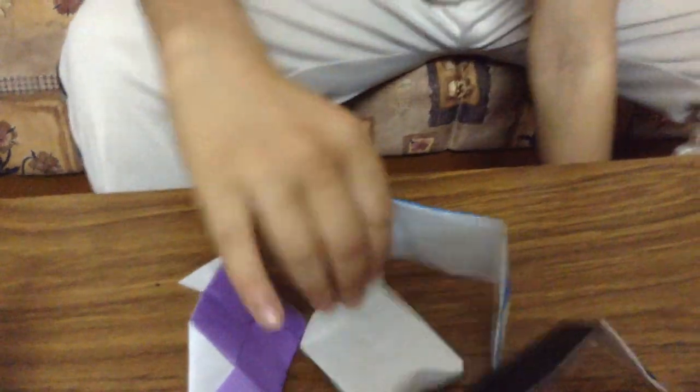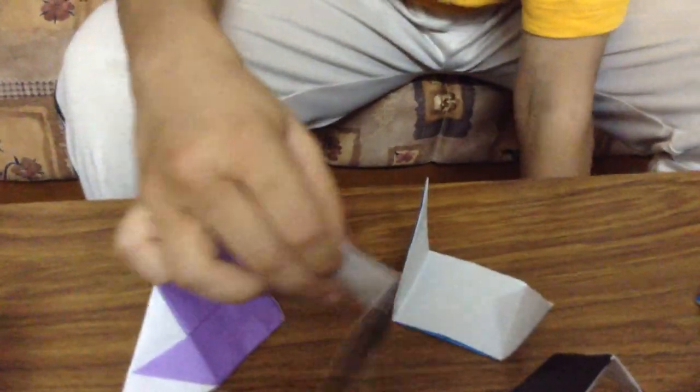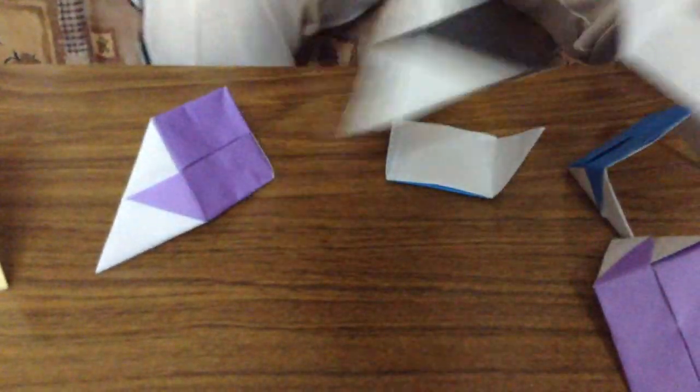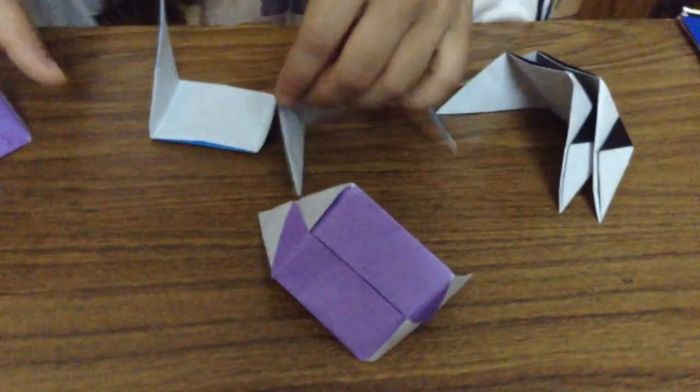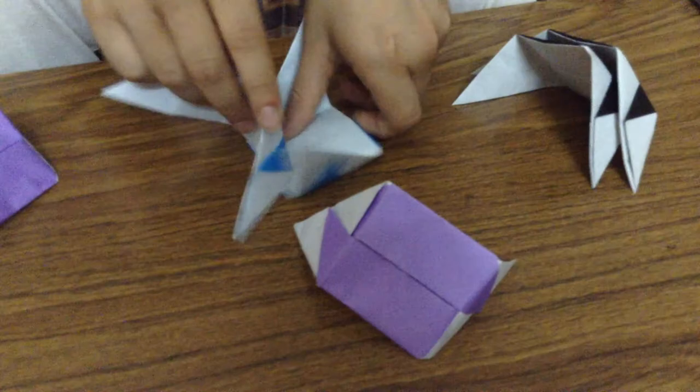Now let me take apart this cube I have here. And in this cube I used six units, which you have to use, and three colors, two of each color.